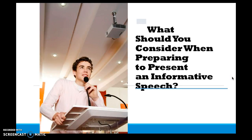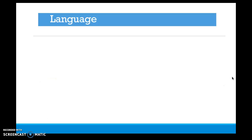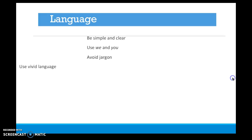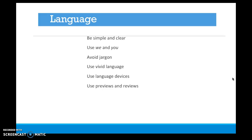When preparing to present an informative speech, language is very important. Be simple and clear — your goal is teaching. Remember, in informative speaking you're not an advocate; you're a teacher presenting knowledge. Use 'we' and 'you' to include the audience. Avoid jargon, acronyms, and unfamiliar references. Use vivid language and devices such as repetition to help your audience learn and remember. Use previews, reviews, and signals — especially if giving a speech to instruct — to take your audience with you through the speech.